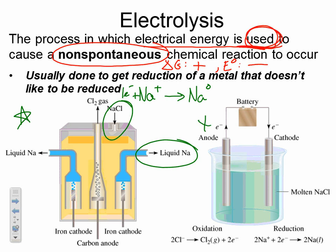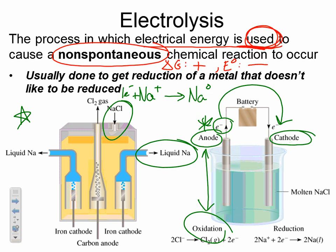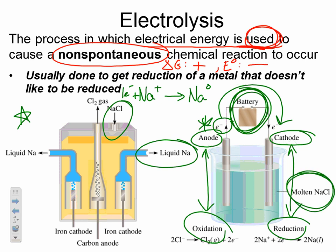The cell on the right is more like what an electrolytic cell would look like in a normal lab setting rather than an industrial setting. We still have an anode and a cathode. The flow of electrons still moves from anode to cathode, which means oxidation is still occurring at the anode and reduction is still occurring at the cathode. The big difference is the presence of a battery here instead of a voltmeter — the battery drives this non-spontaneous process.